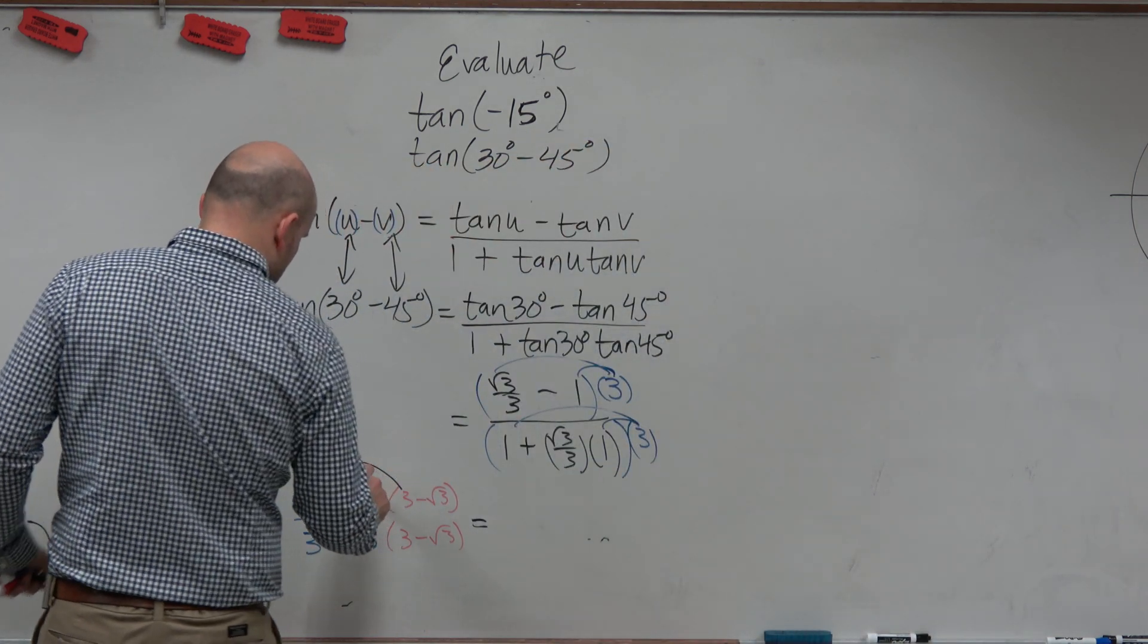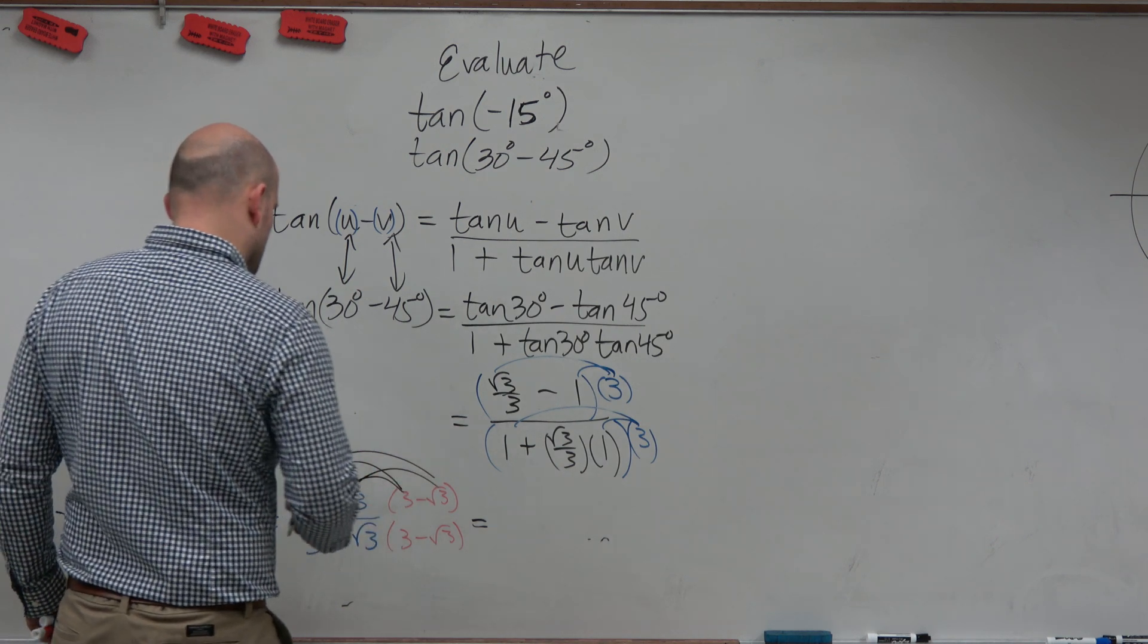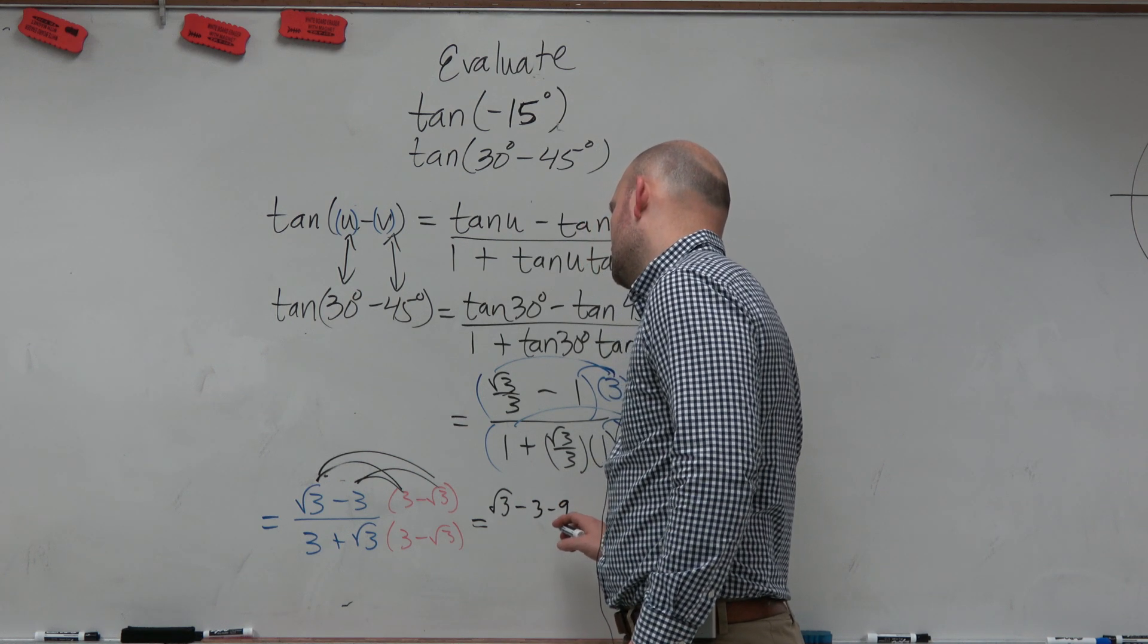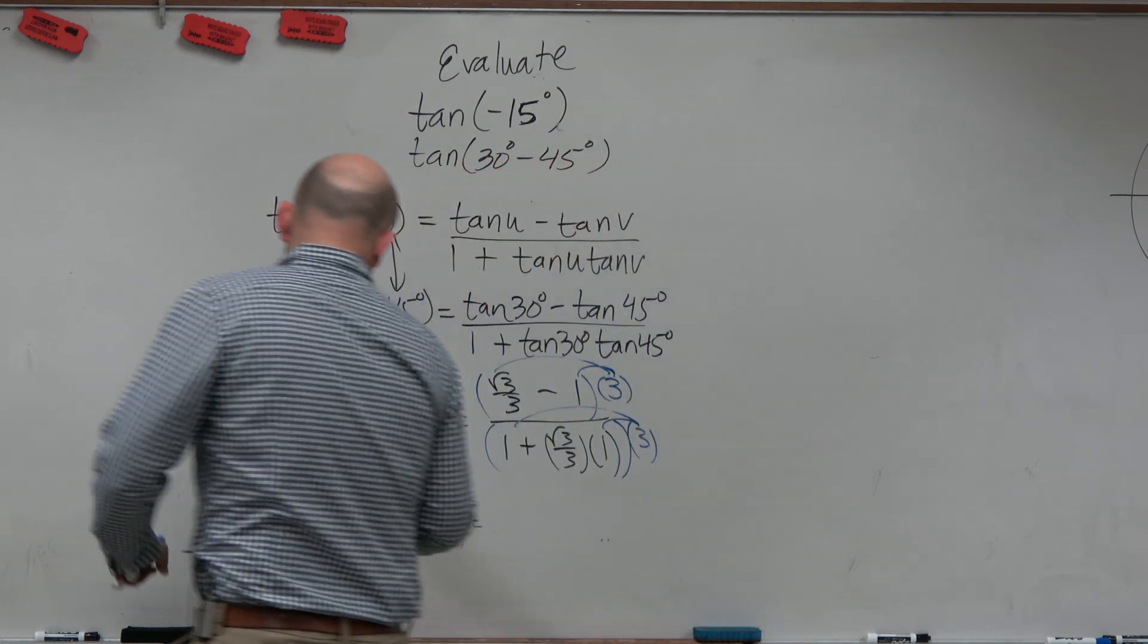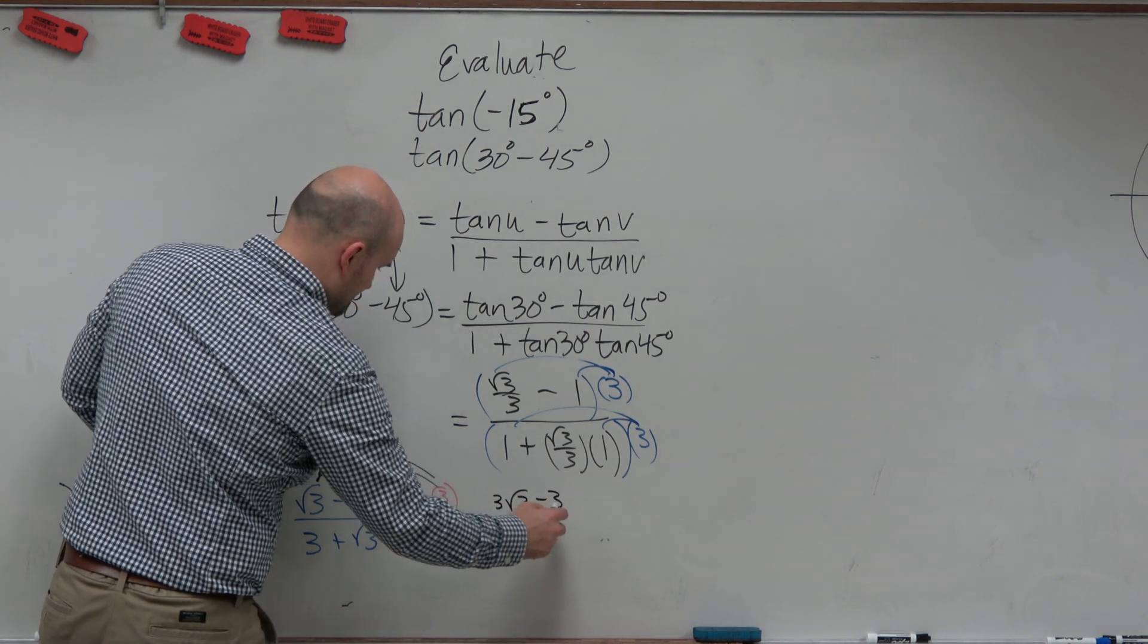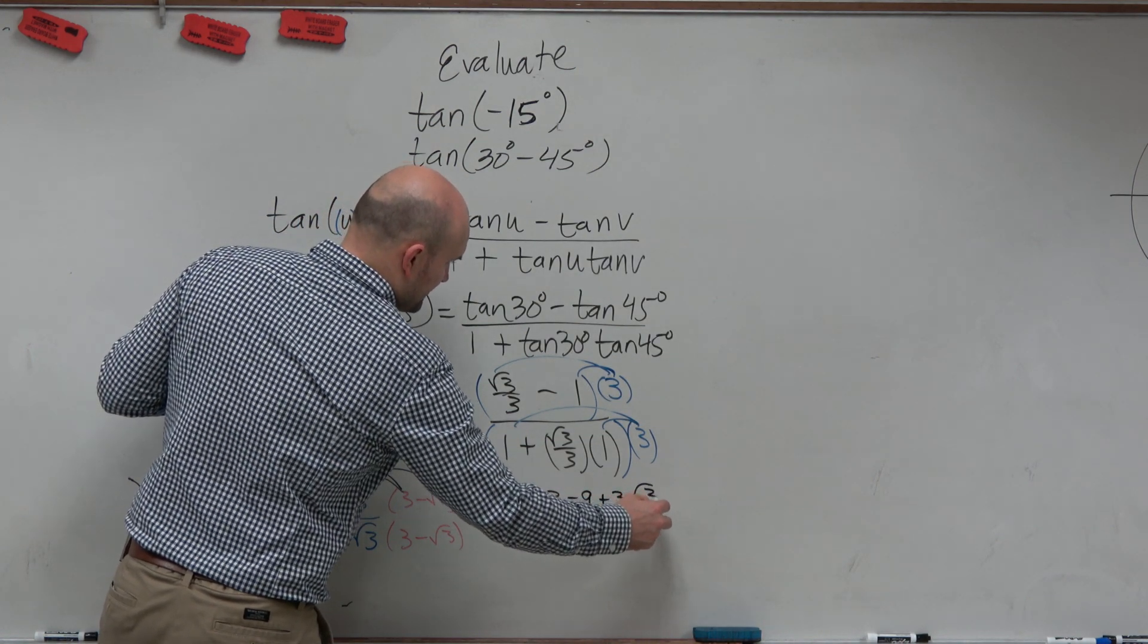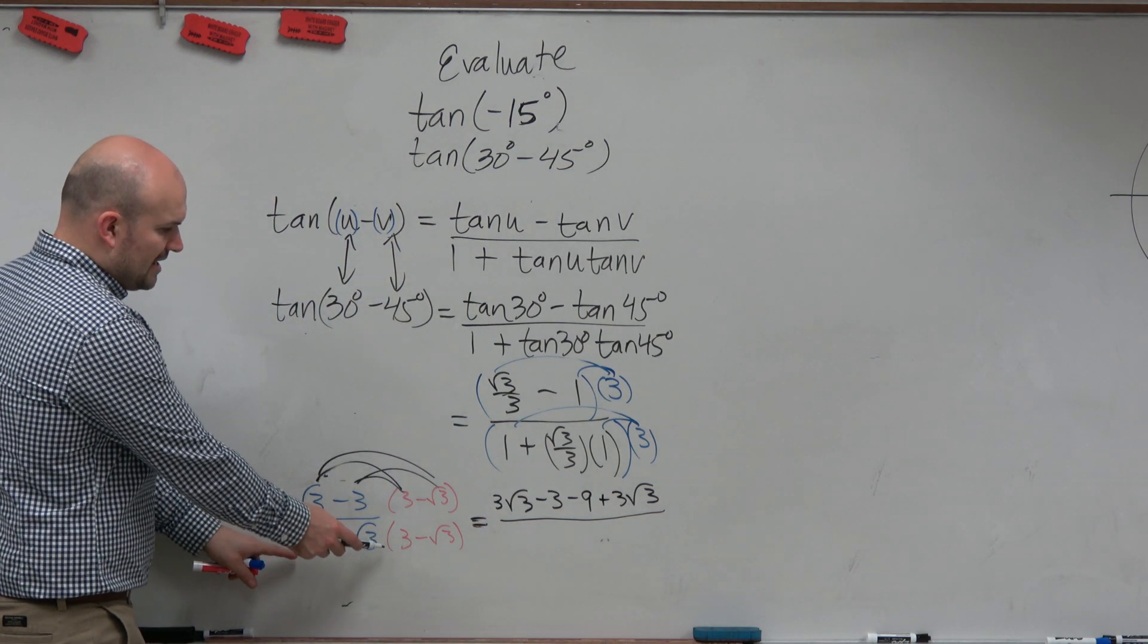So we'll have square root of 3 minus 3 minus 9. Wait a minute. Oh, sorry. So square root of 3 times 3 is 3 square root of 3. Square root of 3 times square root of 3 is negative 3. Negative 3 times negative 3 is negative 9. Negative 3 times the negative square root of 3 is a positive 3 square root of 3. The denominator is a little bit easier because that's a difference of two squares, right? So that's 9 minus 3.